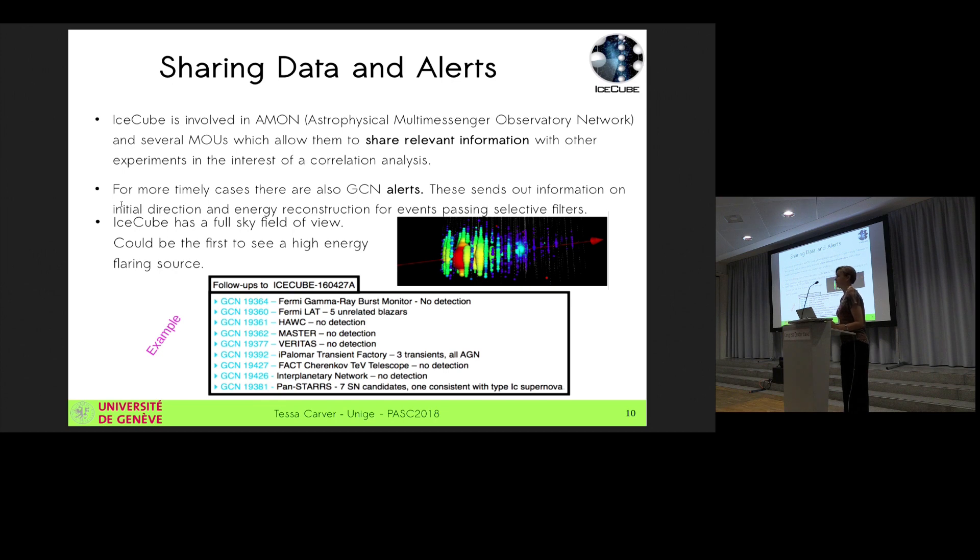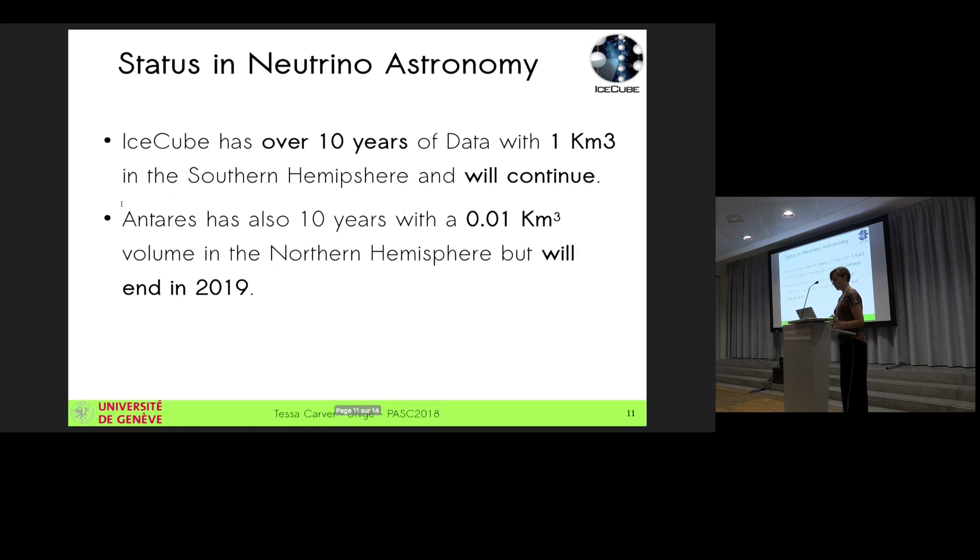So this is just an example of a GCN alert that was sent out where we would have done a preliminary reconstruction and energy, like direction and energy reconstruction. And these need to be done again, but we will have something. And then we tell the other telescopes to look and they report back if they saw anything, if they didn't see anything, whether it was unusual.